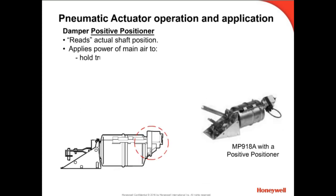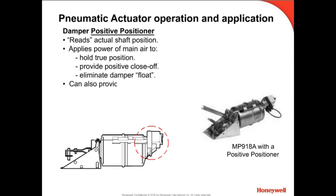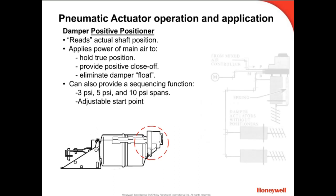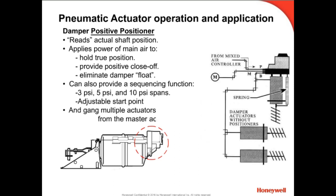Pneumatic controllers develop considerable torque, but a positive positioner can be added for additional damper control power. This device can apply full main air pressure to keep the damper closed tightly, or add additional control pressure to hold damper position true during abrupt airflow velocity or pressure changes in the duct. It does this by sensing the actual damper position via a connected spring attached to the damper shaft. As an additional benefit, this device can also perform a control sequencing function and gang together multiple dampers.